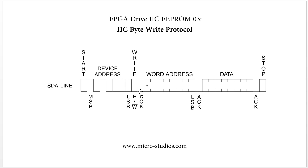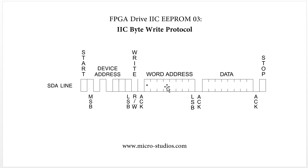After this, it will follow one word address. This address is the address inside the EEPROM — it's the address where you will write the data. For this word address, it is 8-bit.